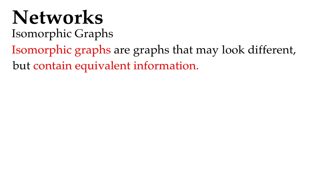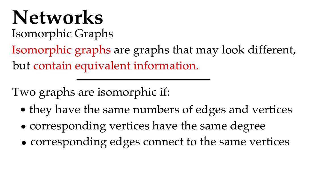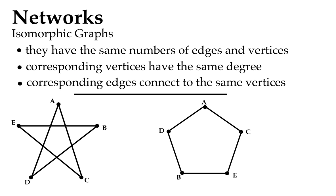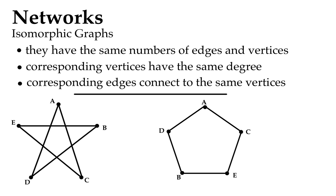Isomorphic graphs: they're interesting pairs of graphs that may look very different but when you have a close look at them they contain equivalent information. The information we're looking for is that they have the same numbers of edges and vertices, they have corresponding vertices that have the same degree, and corresponding edges connect to the same vertices. If you have a close look at these examples here, A, B, C, D are all in the same situation in both diagrams. They're connected to the same vertices. None of the vertices have changed their degree between the two, and the same number of total edges and vertices are in the two diagrams.